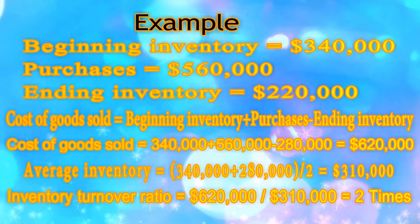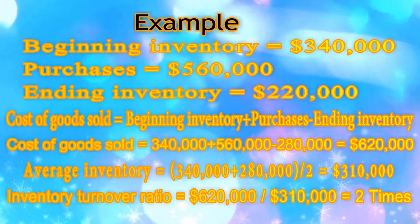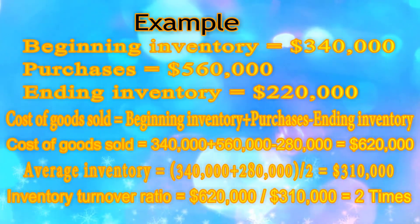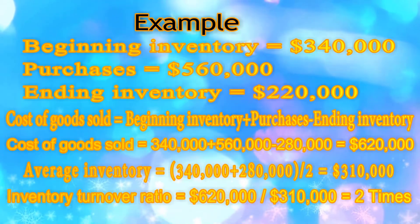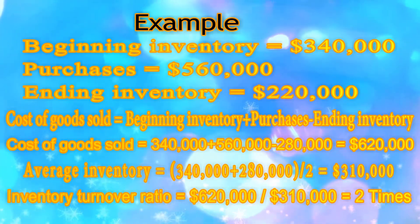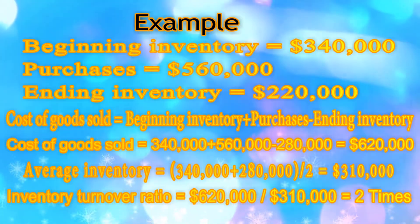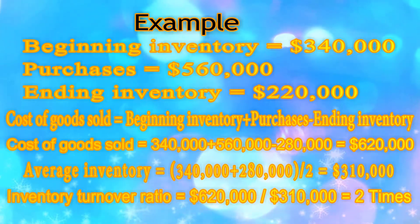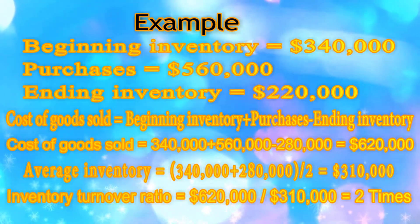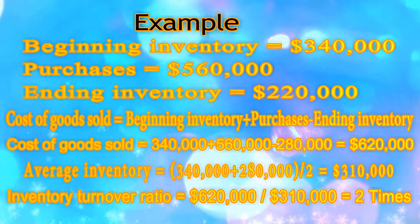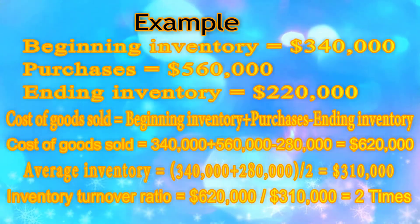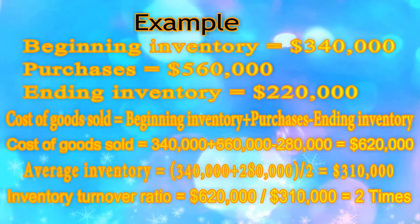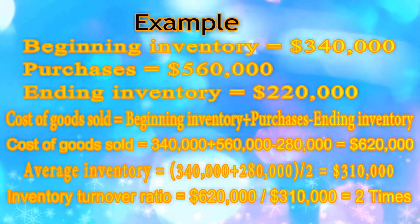Average inventory can be calculated by taking the average of beginning inventory and ending inventory. From the above figures, the average inventory is $310,000. Now let us calculate the inventory turnover ratio, which equals cost of goods sold divided by average inventory. We will get an inventory turnover ratio of 2, so the ratio is exactly 2.